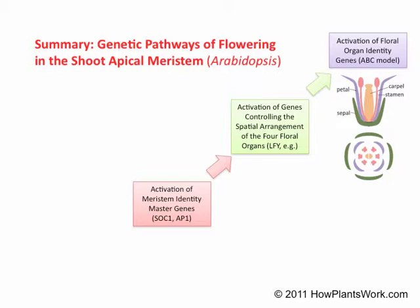Going back to stage one, the initial question is: what triggers the activation of the meristem identity master genes? In many plants, the transition from vegetative to flowering plant is controlled by the photoperiod — that is, the relative length of the night. Much of what we know about the genetics of flowering comes mainly from studies of such plants over the past 100 years.